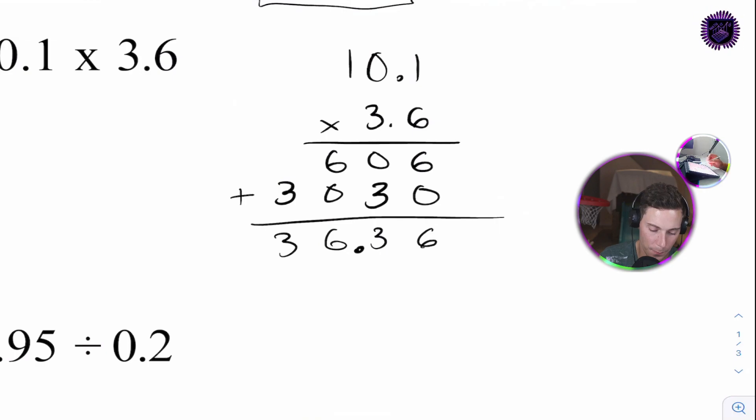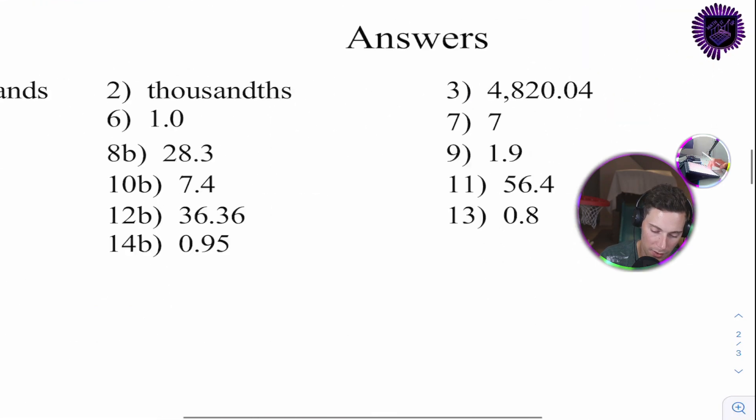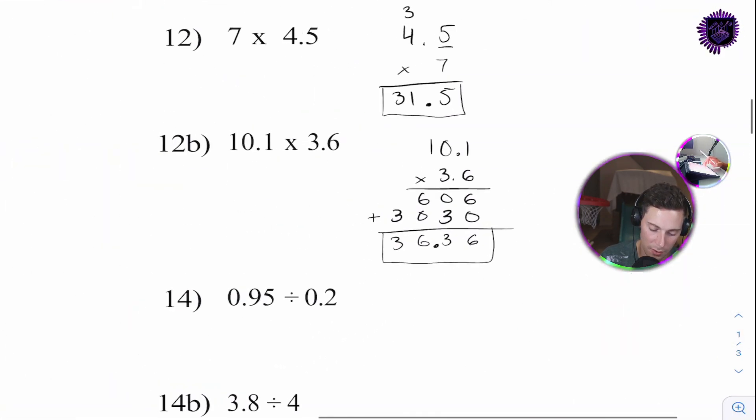And, we can box our answer. And, we can always check it. 12b. 36. 36. 36. 30. All right.